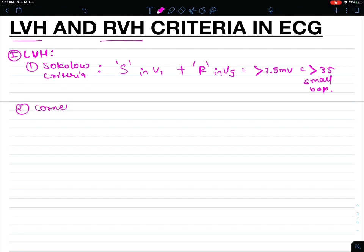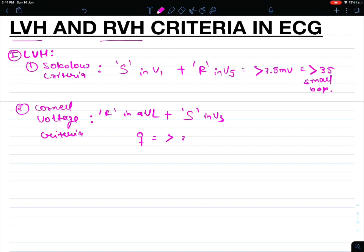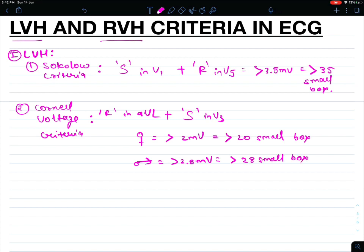Second is Cornell voltage criteria. In this we will see R wave in AVL and add it to S wave in V3. In women, if it is more than 2 mV or more than 20 small boxes, it is suggestive of left ventricular hypertrophy. In men, if it is more than 2.8 mV or more than 28 small boxes, it suggests left ventricular hypertrophy.